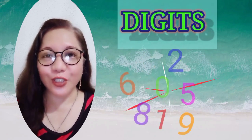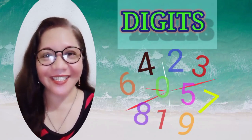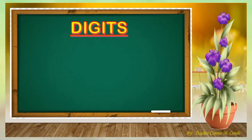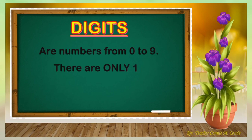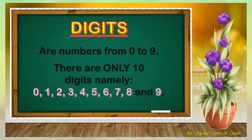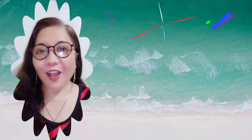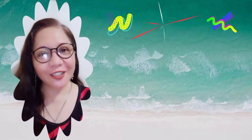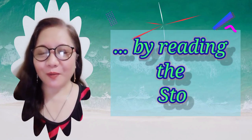Lastly, we will talk about the word Digits. Digits are numbers from 0 to 9. Take note, there are only 10 digits: 0, 1, 2, 3, 4, 5, 6, 7, 8, and 9. We will begin our online learning discussion by reading the story problem.